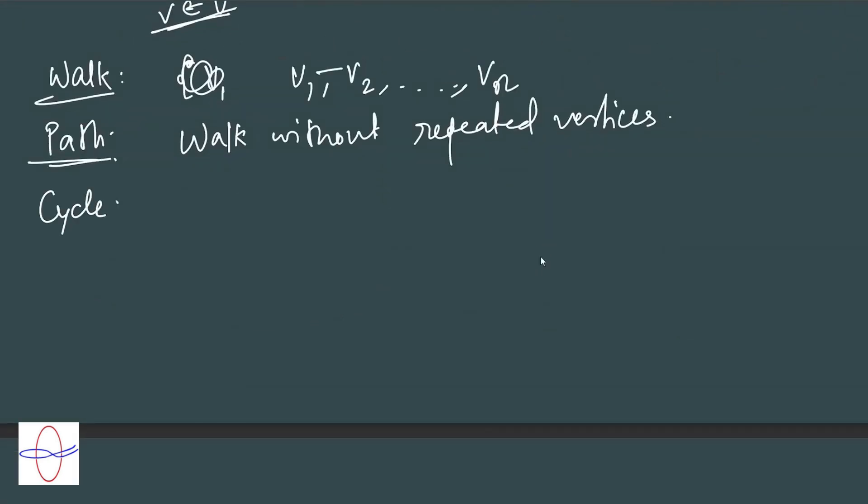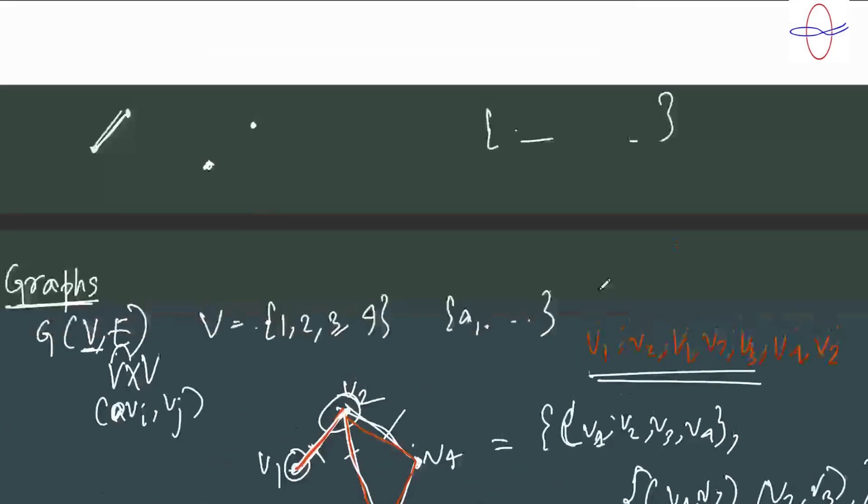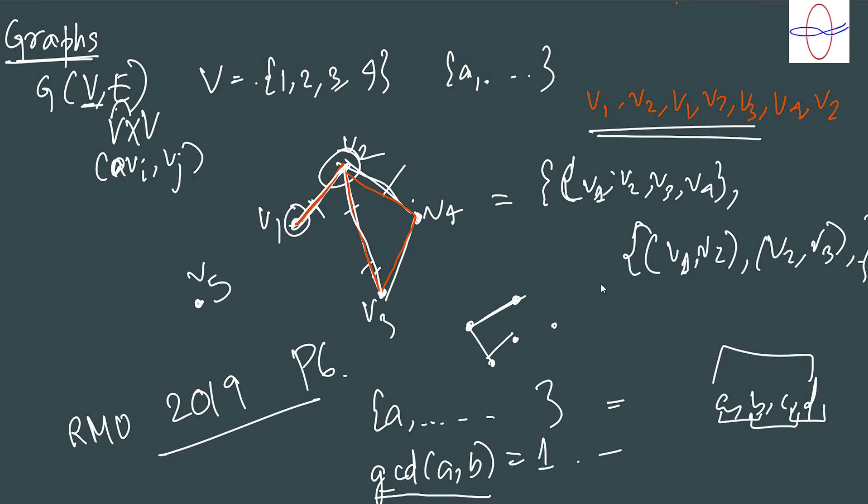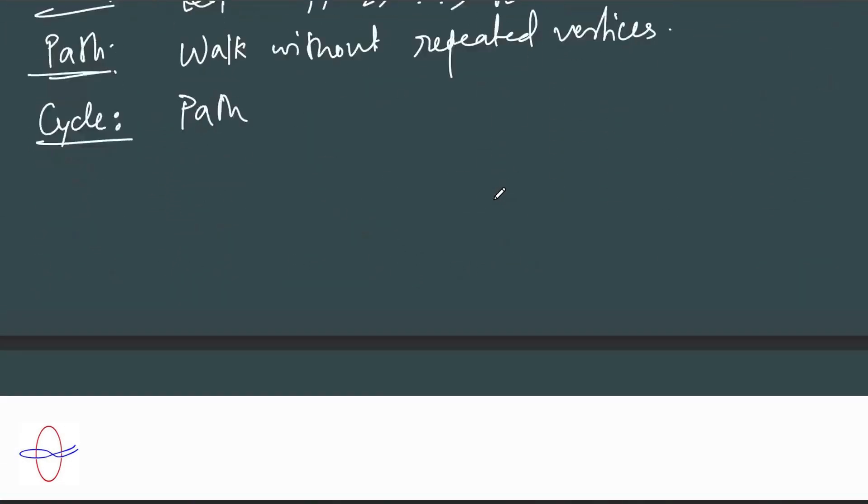A cycle is kind of a path, but the starting and ending vertices are the same. You could say that doesn't qualify as a path - that's alright. Call it a walk without repeated vertices except the last and first vertex. A cycle is exactly what you would expect it to be. We start at v2, go to v3, go to v4, and then go back. It's quite clear what a cycle is.